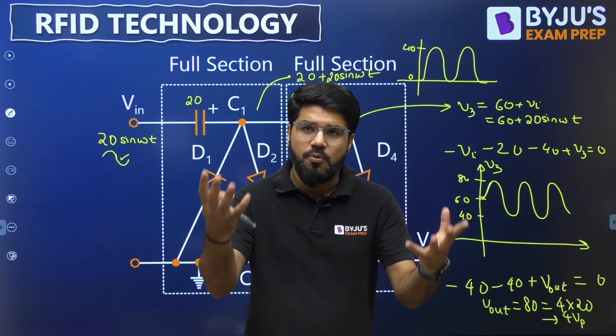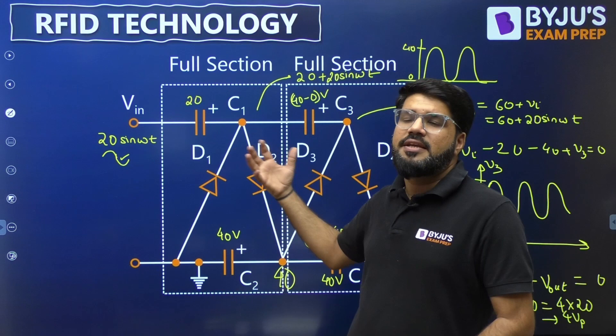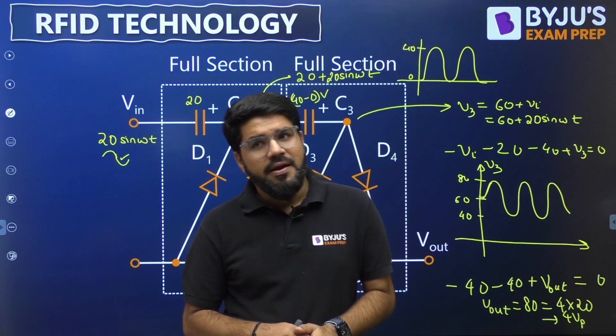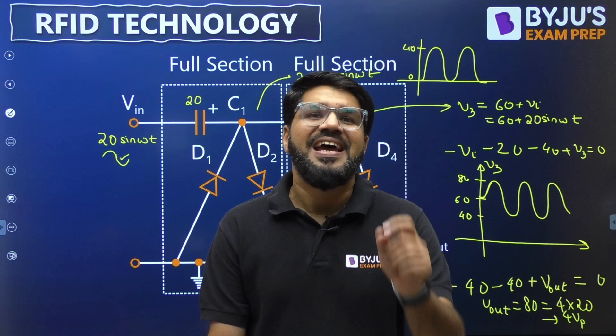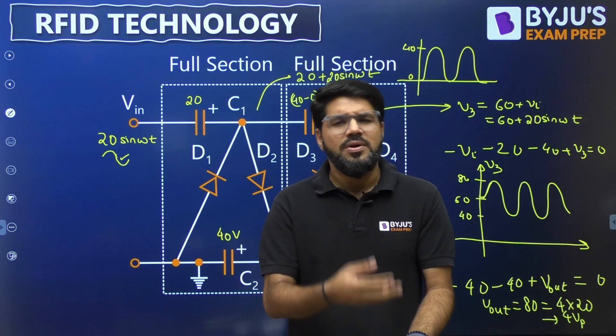The output of the voltage multiplier is fed to the chip to activate it. This DC output activates the chip, which then does its job — it has digital data stored and transmits it via the antenna in the form of radio waves, which is received by the reader as we have already learned.